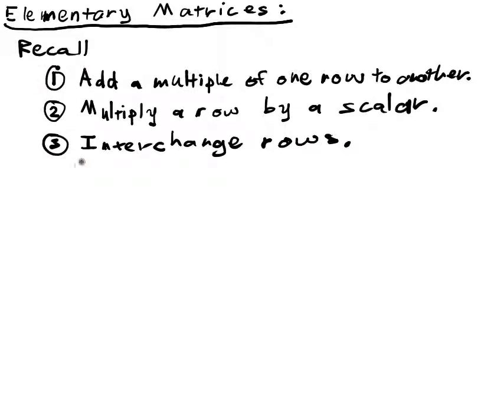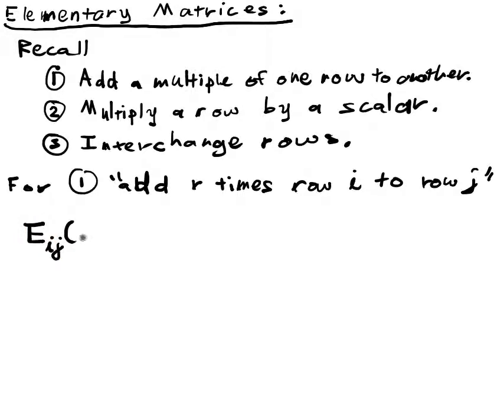And basically we want to figure out matrices that are going to do all of this for a particular matrix. So for one, we're going to say that the matrix where I add r times row i to row j, we're going to set that matrix equal to E_ij of r. And when we multiply that times A, here's what we want to have happen in the long run.